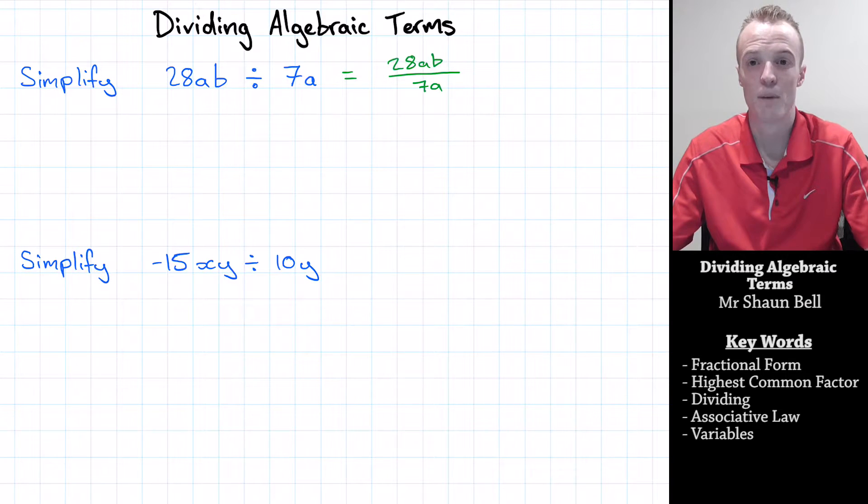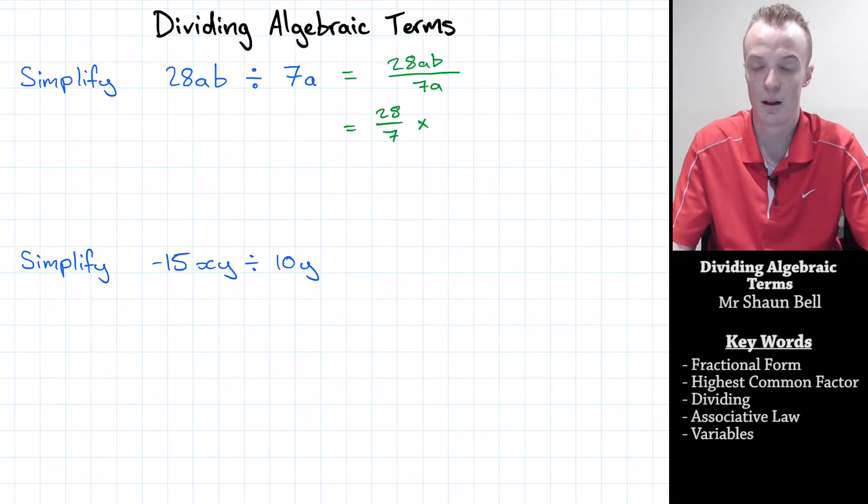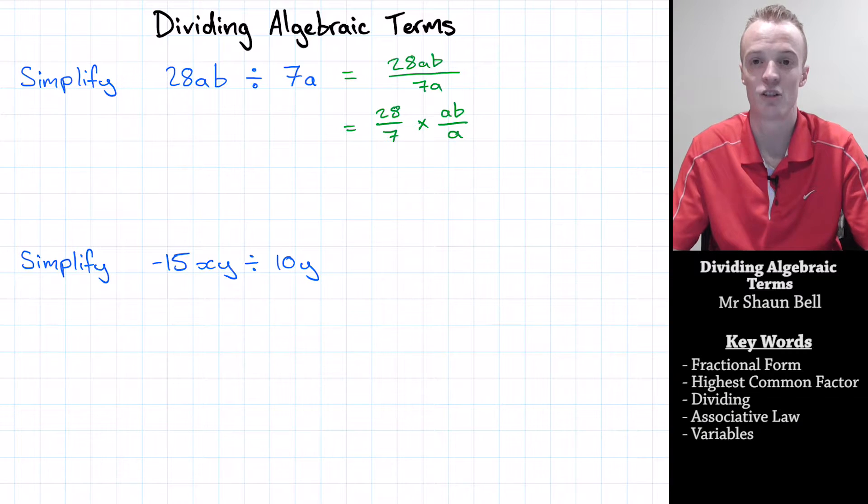Now just like in the multiplying algebraic terms video, we can use the associative law to start breaking this problem up. So we can represent this problem as the number component first, 28 over 7, multiplied by the variable component of ab over a. And this allows us to simplify this much easier.